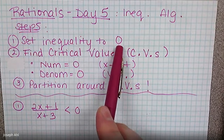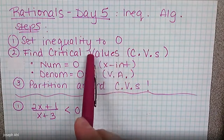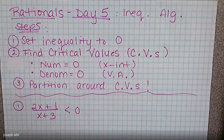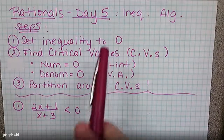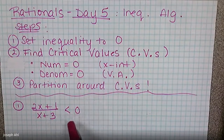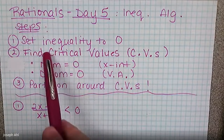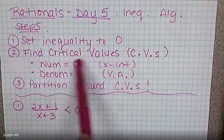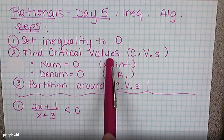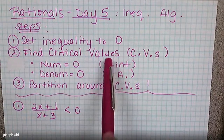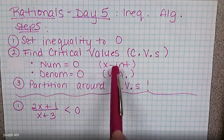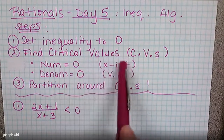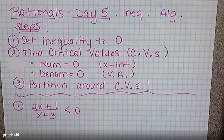Setting it to zero makes our job much easier because then we can compare to see when the graph is positive or negative, which only makes sense when comparing something to zero. Step two: find what I call the critical values. The critical values are those same things we were looking at on the graphs yesterday — the x-intercepts and the vertical asymptotes, which may be multiple depending on the inequality.